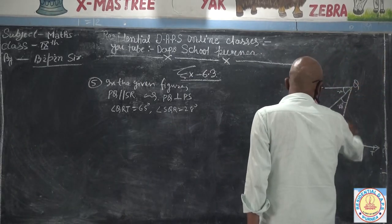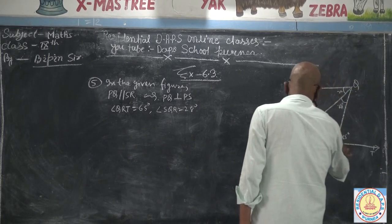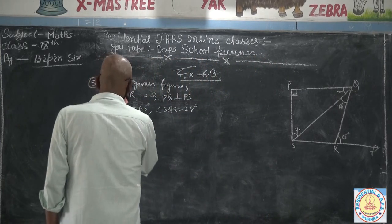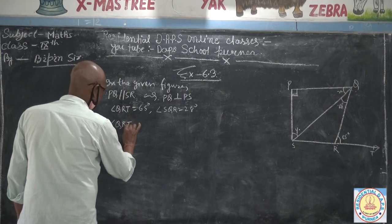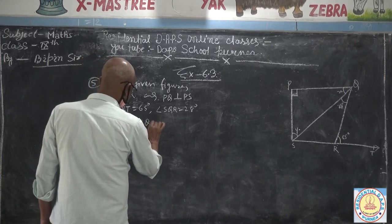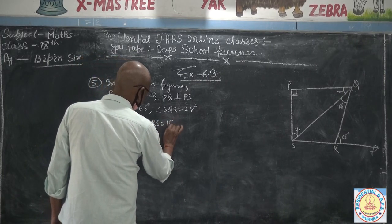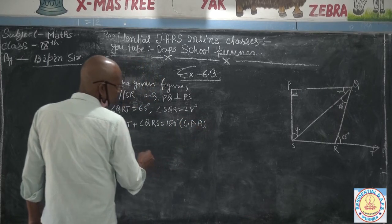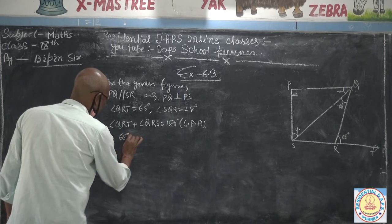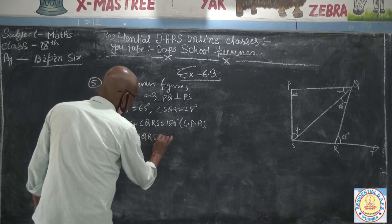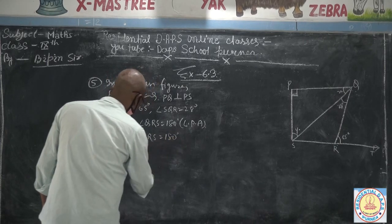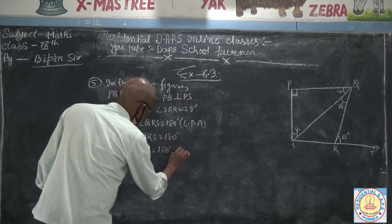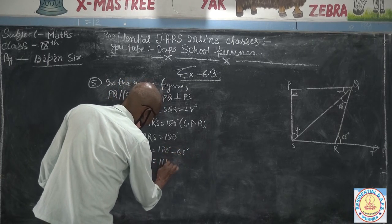First, angle QRT plus angle QRS is equal to 180 degrees because of the linear pair. Angle QRT is given as 65 degrees, so 65 plus angle QRS equals 180. Therefore angle QRS equals 180 minus 65, which is 115 degrees.